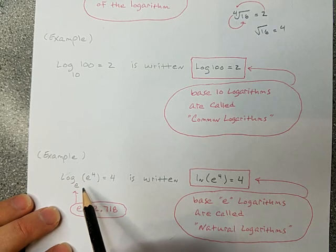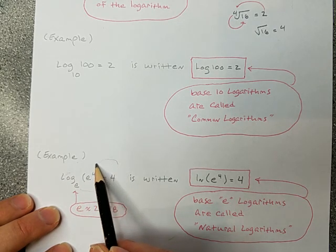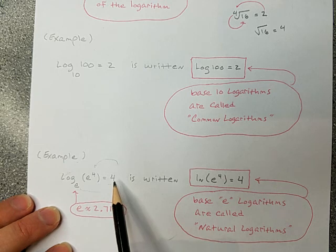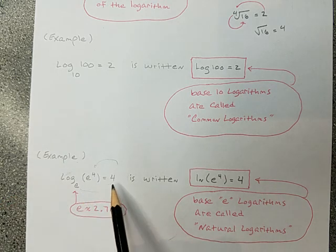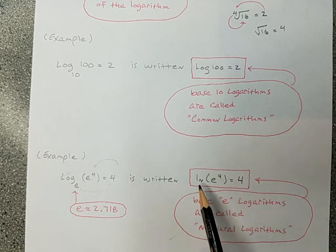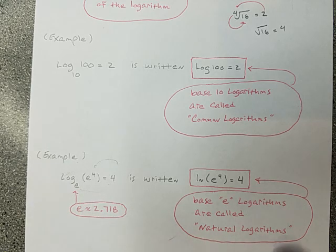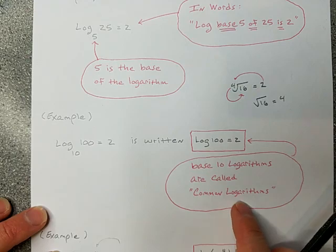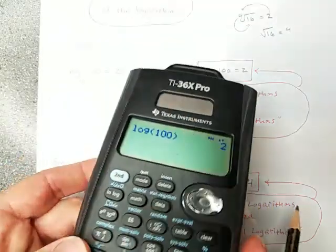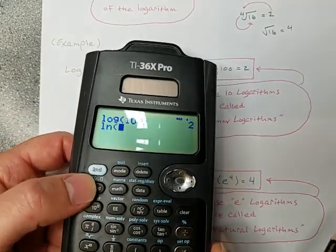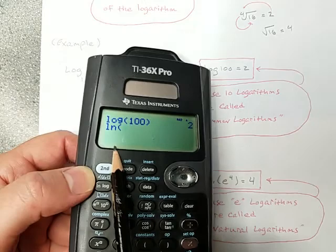Base e logarithms are called natural logarithms. For example, ln of e to the fourth power — is e to the fourth power equal to e to the fourth? Of course it is. So that's true. If you see 'ln,' that is a logarithm base e, also called the natural logarithm. My calculator also has a key labeled 'ln' for natural logarithm, which lets me calculate any natural logarithm I want.